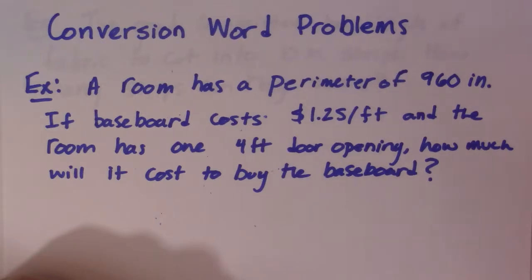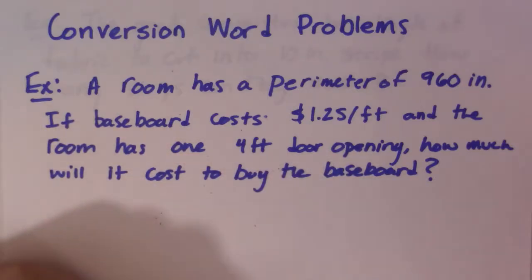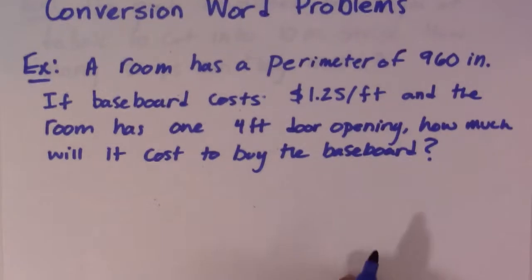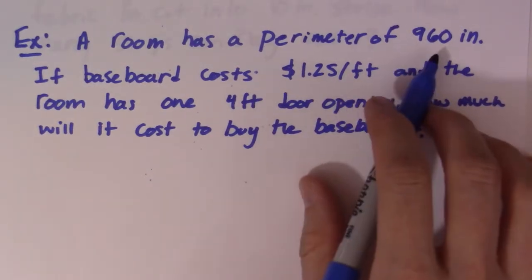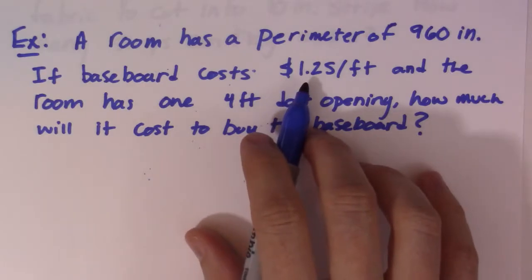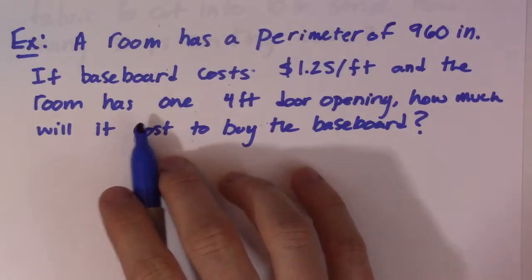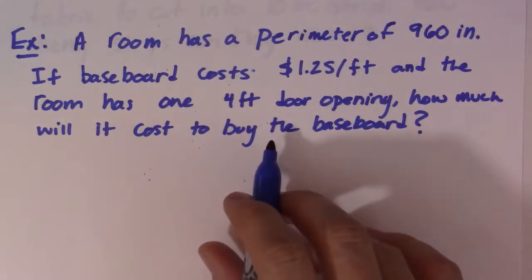The first thing you need to recognize is the type of units you're given and the associated conversion factors. I'll read the question and then we'll try it. A room has a perimeter of 960 inches. If the baseboard costs $1.25 per foot and the room has one 4-foot door opening, how much will it cost to buy the baseboard?